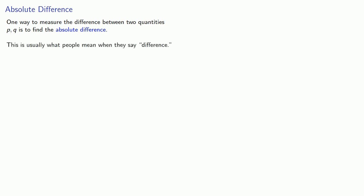One way to measure the difference between two quantities P and Q is to find the absolute difference — the absolute value of the difference between the quantities. This is usually what people mean when they say difference.